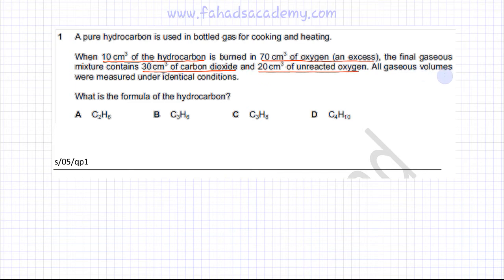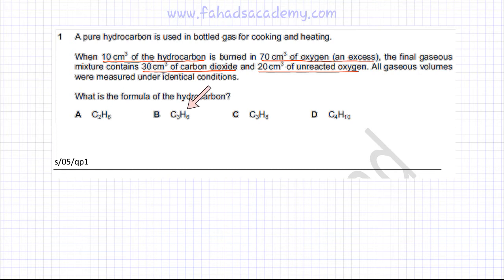All gaseous volumes were measured under identical conditions. We need to figure out the formula of the hydrocarbon. There are two ways of solving this question. Remember, for gases the mole ratio and volume ratio are exactly the same. You can construct equations for each one of the options and see which option fits this information correctly.